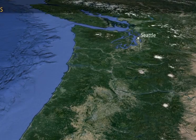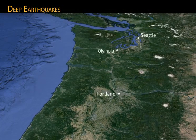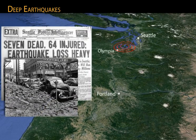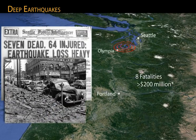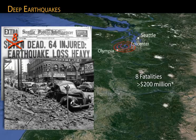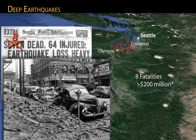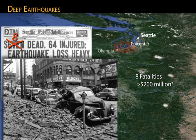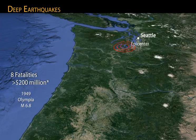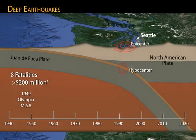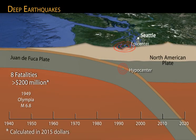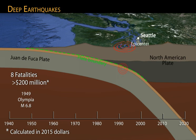We look deeper at earthquakes within the subducting Juan de Fuca plate itself. The 1949 magnitude 6.8 Olympia earthquake caused 8 deaths. Fortunately, it occurred during school vacation, as 10 schools were severely damaged and subsequently closed. The hypocenter of the Olympia earthquake was 52 kilometers deep, at least 7 kilometers below the subduction zone plate boundary and thus within the subducting Juan de Fuca plate.